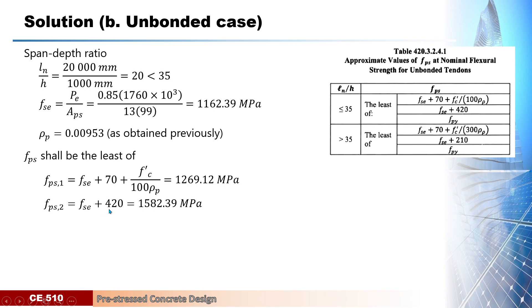For the second condition, FSE plus 420, we got this to be 1582 megapascal. And the third value, fpy, is given to be 1581 megapascal. Therefore, FPS will now be the least of these three, which is 1269.12 megapascal.